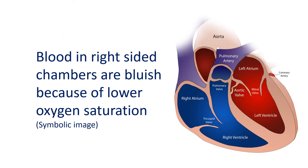Oxygen saturation is measured by withdrawing small samples of blood from the concerned chamber. The samples are analyzed in an equipment known as a blood gas analyzer, which gives the amount of oxygen in blood as well as other important information. Usually, oxygen levels are lower in the right sided chambers and pulmonary artery, and higher in the left sided chambers and aorta.